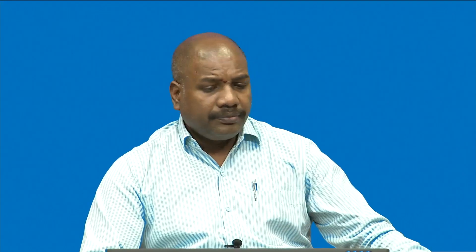Mmax basically represents the earthquake potential of the region. It can be estimated by knowing the rupture length, rupture area, and maximum surface displacement correlation in a particular region. These empirical formulas can be used: if you know the rupture length and rupture area from seismotectonic details, you can estimate Mmax using empirical correlations.